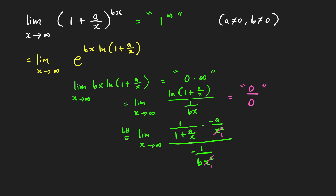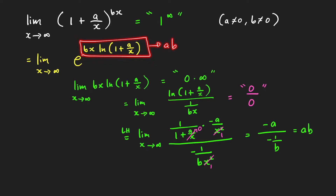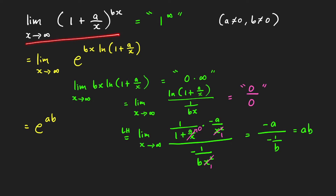Now we can determine the limit. Since a over x goes to 0, the limit equals negative a over negative 1 over b, which equals a times b. Since this exponent approaches ab as x goes to infinity, the limit is equal to e raised to ab. This result also holds when a equals 0 or b equals 0, because in those cases the limit of the expression equals 1.